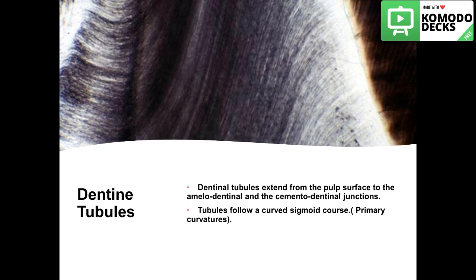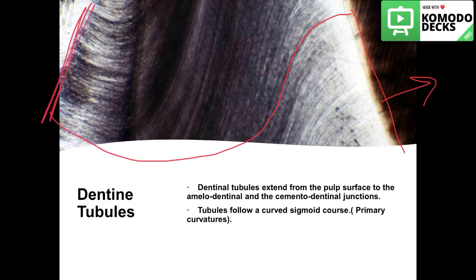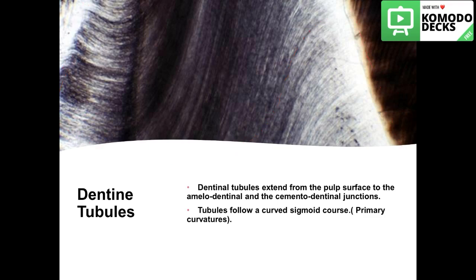Now let's start with the histology of dentine. Dentine is composed mainly of dentinal tubules in an organic matrix. These dentinal tubules extend from the pulp surface to the amelodentinal junction and the cementodentinal junction. This is the first histological slide — you can see dentine here, enamel, and the dentinal tubules extending from the dentino-enamel junction to the pulp. The tubules follow a curved sigmoid S-shape, called the primary curvature. When cut in cross-section, the tubules appear as circles.